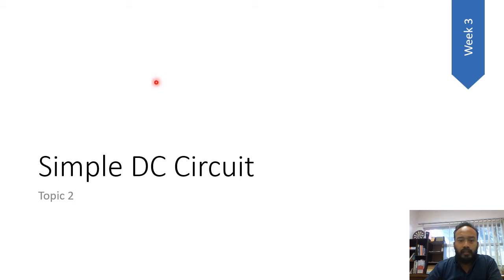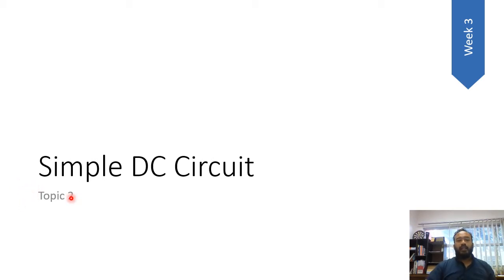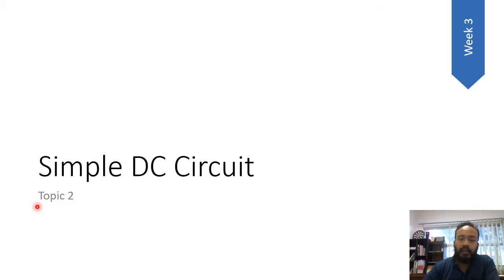Welcome to the third lecture of our subject, Electrical Principle. We are now in week three. Last week we looked into the definition of resistivity, different types of resistance, and parameters influencing the value of resistance. After understanding resistance, which serves mostly as a load for our electrical circuit, we can now play around with those resistances and look at several interesting characteristics that come out of different configurations. So let's begin.